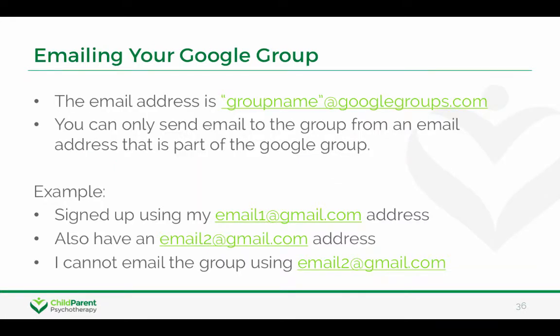When you want to email your Google Group, you write down the name of your group — the email address is just groupname@googlegroups.com. You need to remember that you can only send email to the group from an email that is part of the group. So if you signed up using email1@gmail.com, you can't email the group using a second email like email2@gmail.com — you can only email using email1.